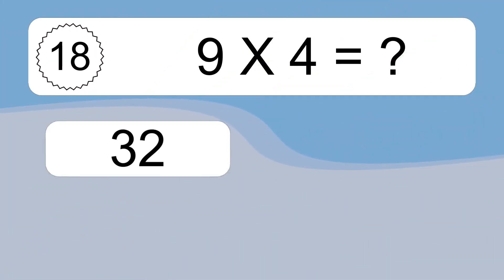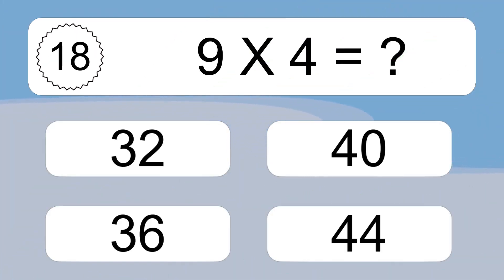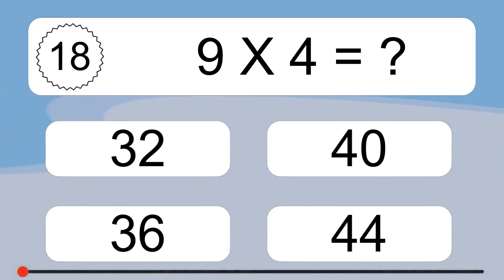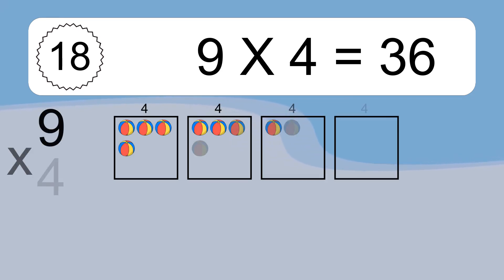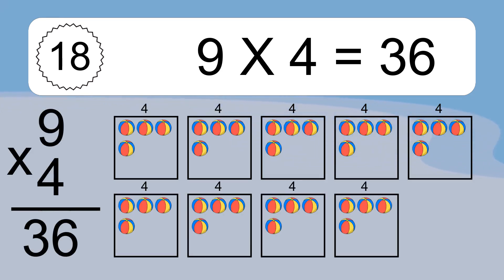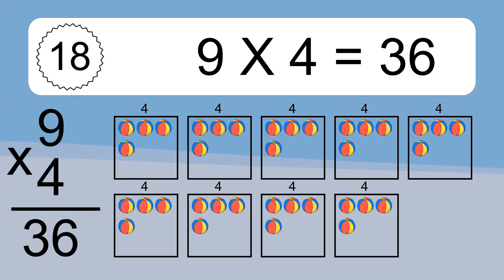9 times 4 equals what? 9 times 4 equals 36. We have 9 boxes, and each box has 4 colorful balls inside. If you count all the balls in all the boxes together, you will have 9 times 4 balls. This equals 36 balls.